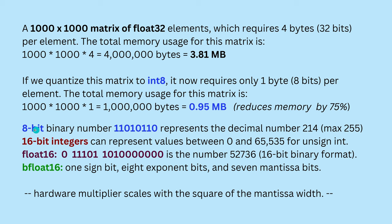If we quantize this matrix to integer 8, it now requires only 1 byte or 8 bits per element. The total memory usage goes down from 3.81 megabytes to 0.95 megabytes — a memory reduction of 75%. Just to remind you: an 8-bit binary number represents, for example, the decimal number 214, and with 8-bit the maximum is 255. A 16-bit integer can represent values between 0 and 65,000 for unsigned integer. And then we have float16 — the 16-bit binary format of a number like 52,736, with 1 leading bit for the sign, 5 bits for the exponent, and 10 bits for the significand or mantissa.